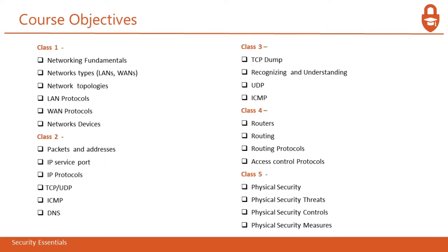In Class 2, you will get packets and addresses, IP service ports, IP protocols, TCP, UDP, ICMP, and DNS. In Class 3, we are going to go over TCP dump, recognizing and understanding UDP and ICMP. In Class 4, we are going to go over routers, routing, routing protocols, and access control protocols. In Class 5, we will finish up with physical security, physical security threats, physical security controls, and physical security measures.